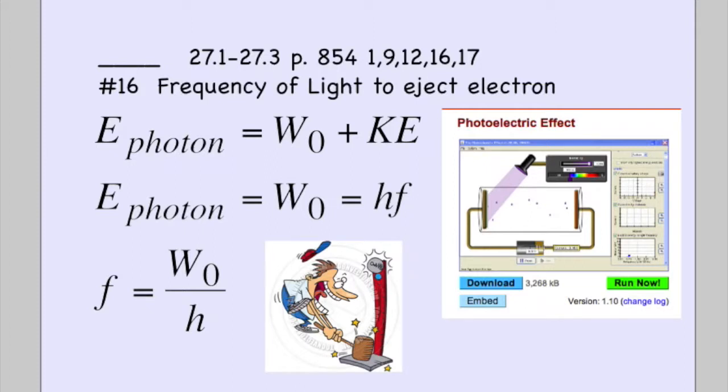Number 16, they give you the work function of a metal and the photoelectric effect, and they want to know the minimum frequency. So you can play around with the FET simulation on this, but the equation for the photoelectric effect is the energy of the photon coming in hitting the metal.